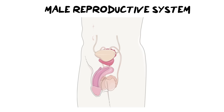Hi everybody and welcome back to Ms. Angler's biology class. I am Ms. Angler. In today's video we're going to be looking at the male reproductive system — the structures, their functions, and we're also going to overlap this lesson with what we've done in spermatogenesis. I've linked that video above so you can watch it afterwards in preparation for a test where you may need to know both the structure, function, and processes that occur within the male reproductive system.